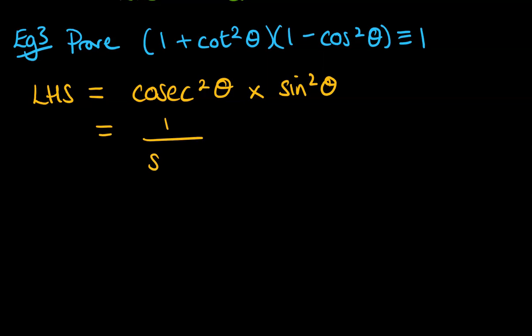Well, cosec is 1 over sine squared theta. Timesing it by sine squared theta means that those sine squareds will cancel. That's equal to 1, which was the right-hand side, as we were asked for.